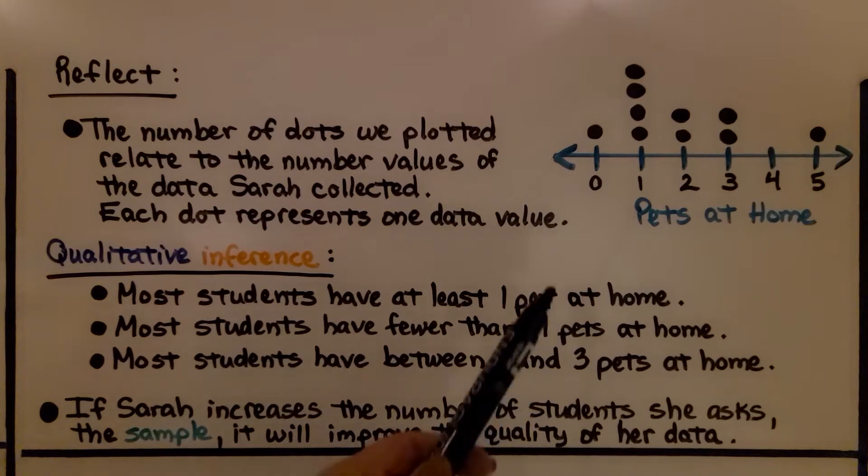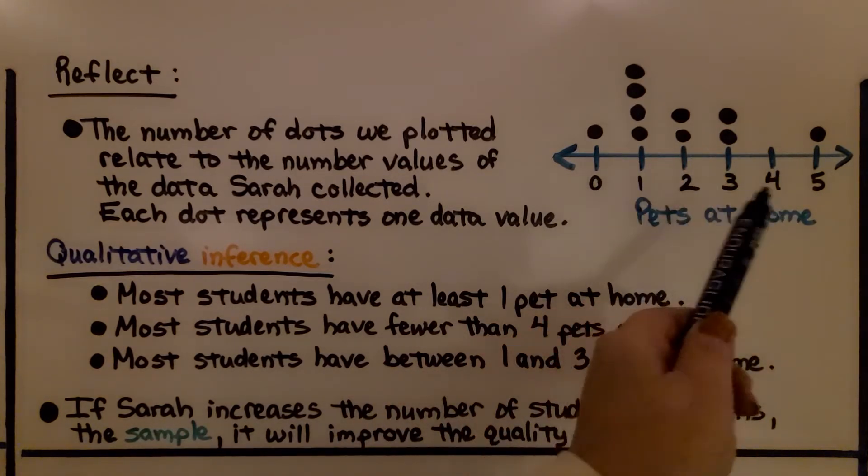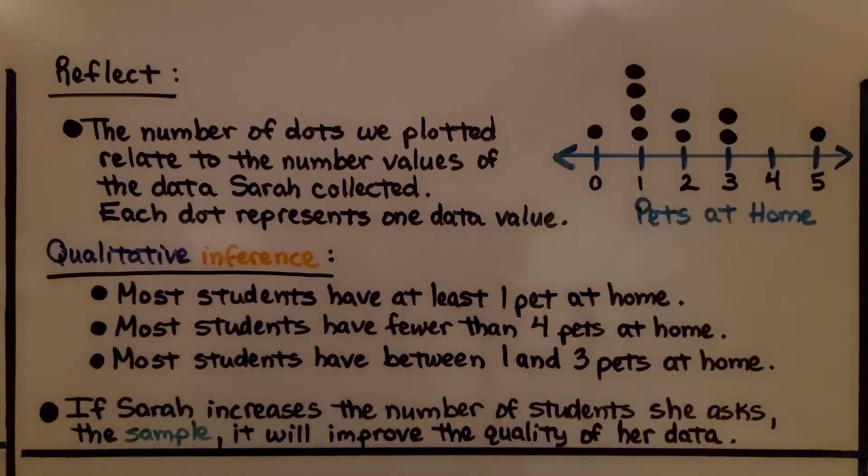So here's Sarah's dot plot of the children that were waiting in line for lunch. How many pets are at home? The number of dots we plotted relate to the number values of the data Sarah collected. Each dot represents one data value, one number, one answer.